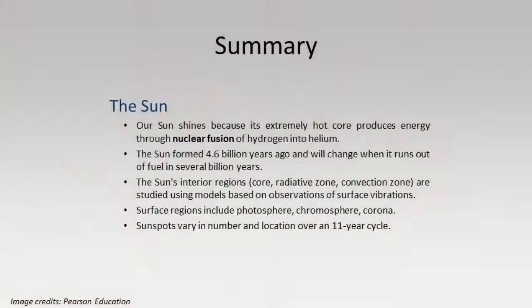In summary: the Sun is a huge ball of gas formed over 4.5 billion years ago. Gravity has compressed it to the point that the core, at over 15 million degrees, now generates tremendous energy via nuclear fusion of hydrogen to helium. The Sun is approximately halfway through its lifespan and should last at least another 4.5 billion years. We looked inside the Sun at the different regions — the core, the radiative zone, and the convection zone, where energy travels through.